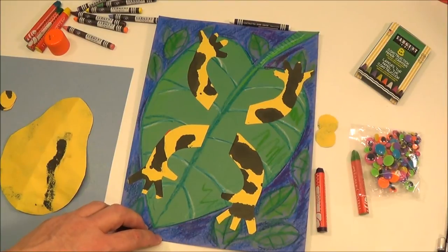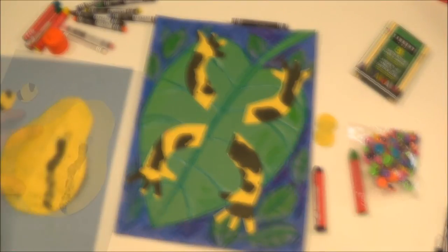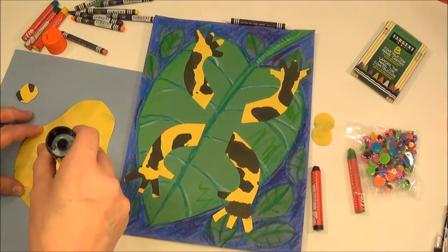Glue the four legs onto the leaf, two facing forward and two facing backward. Glue the body on top of the legs.